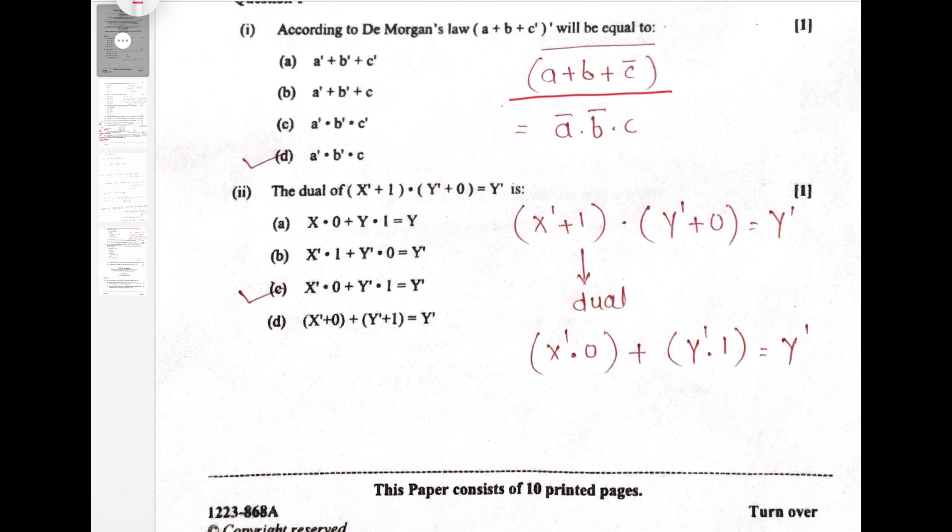Question 2. Dual. What is dual? Dual of a given expression we have to find. Now dual of expression says we have to replace dot with plus, plus with dot, one with zero and zero with one. So accordingly if I solve, option C is correct.